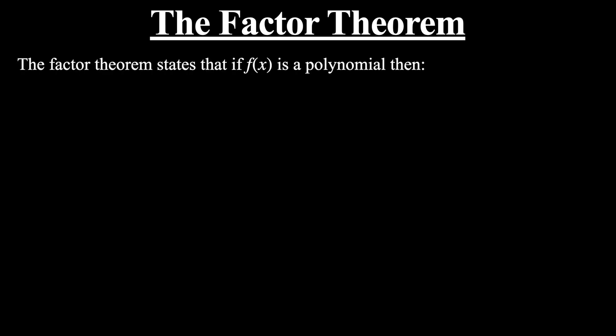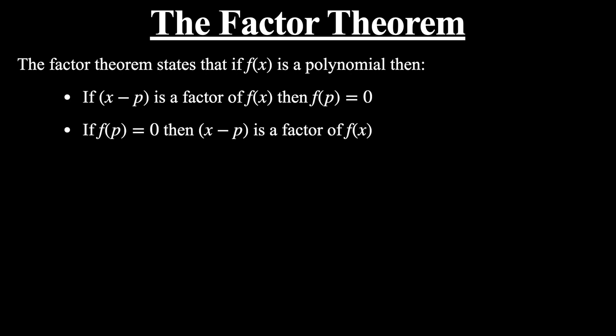So firstly, what does the factor theorem tell us? The factor theorem states that if f(x) is a polynomial, then if x minus p is a factor of f(x), then f(p) equals 0. Also, the factor theorem states that if f(p) equals 0, then x minus p is a factor of f(x).